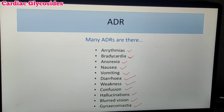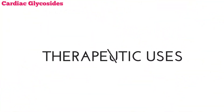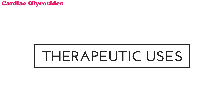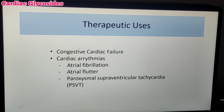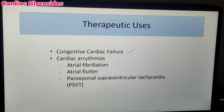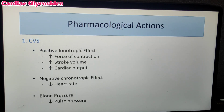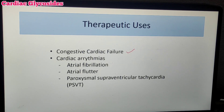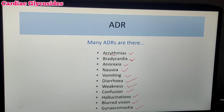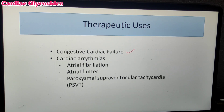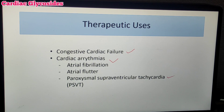Overall, those are the adverse drug reactions of Cardiac Glycosides. Next, therapeutic uses. The primary use — approximately 99% — is for congestive cardiac failure, where Digoxin and Digitoxin are used. A secondary use is for cardiac arrhythmias, which is somewhat contradictory since the drug itself can produce arrhythmias. Specific arrhythmia conditions treated include atrial fibrillation, atrial flutter, and PSVT — paroxysmal supraventricular tachycardia. In all these conditions, these drugs are helpful.